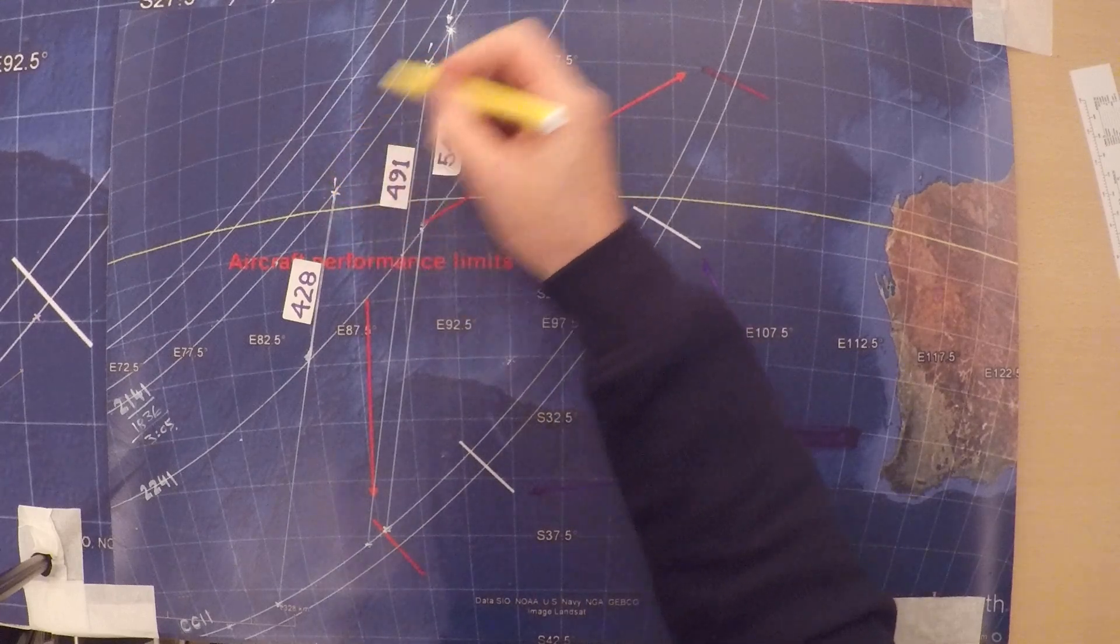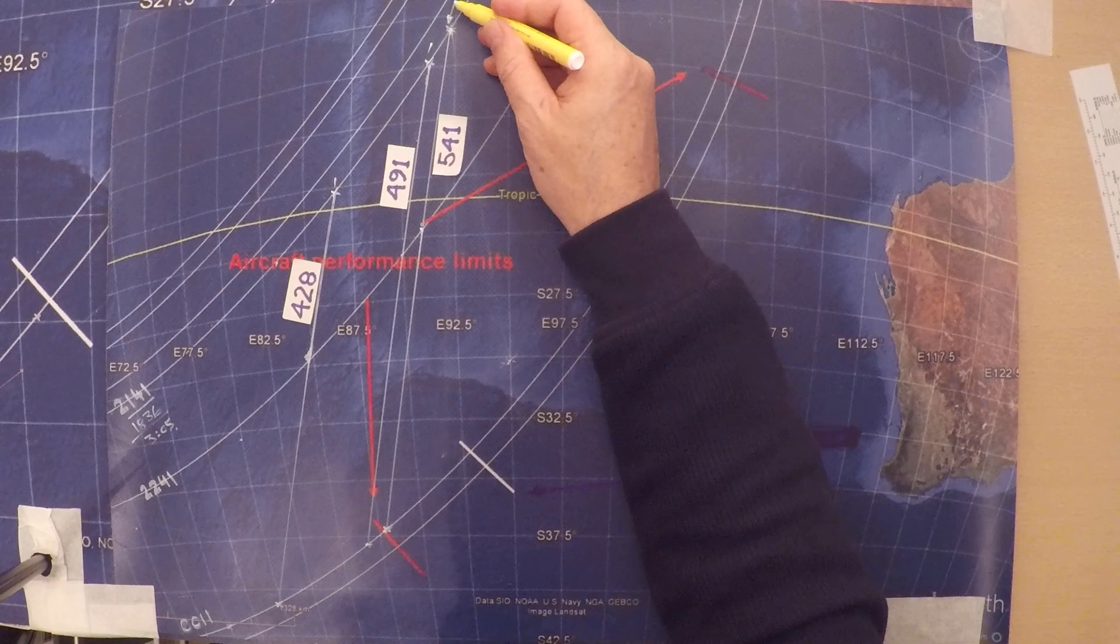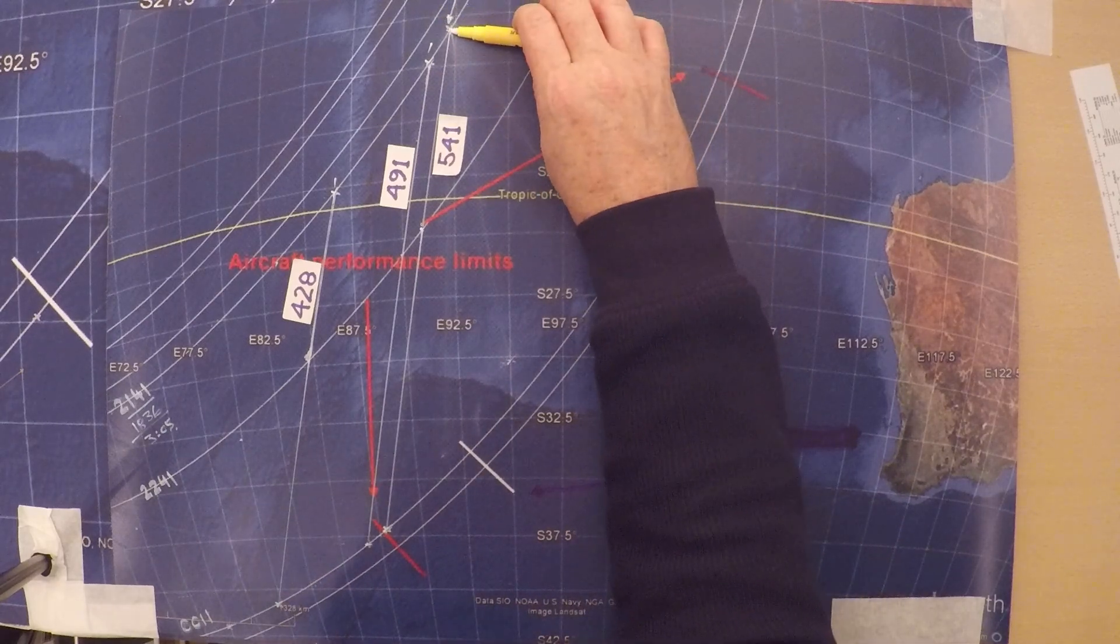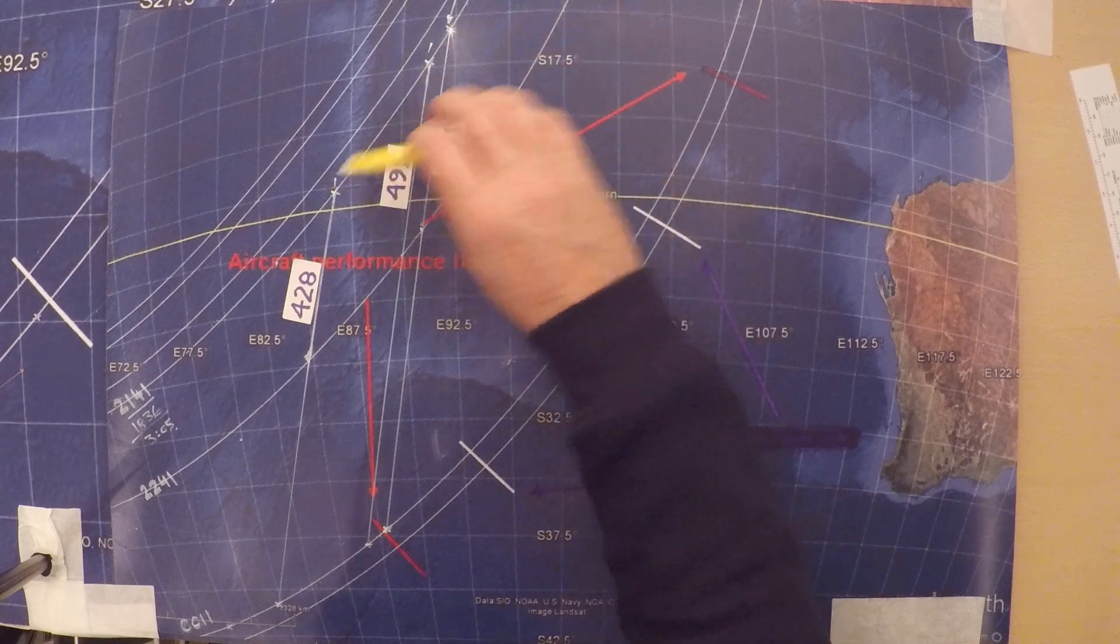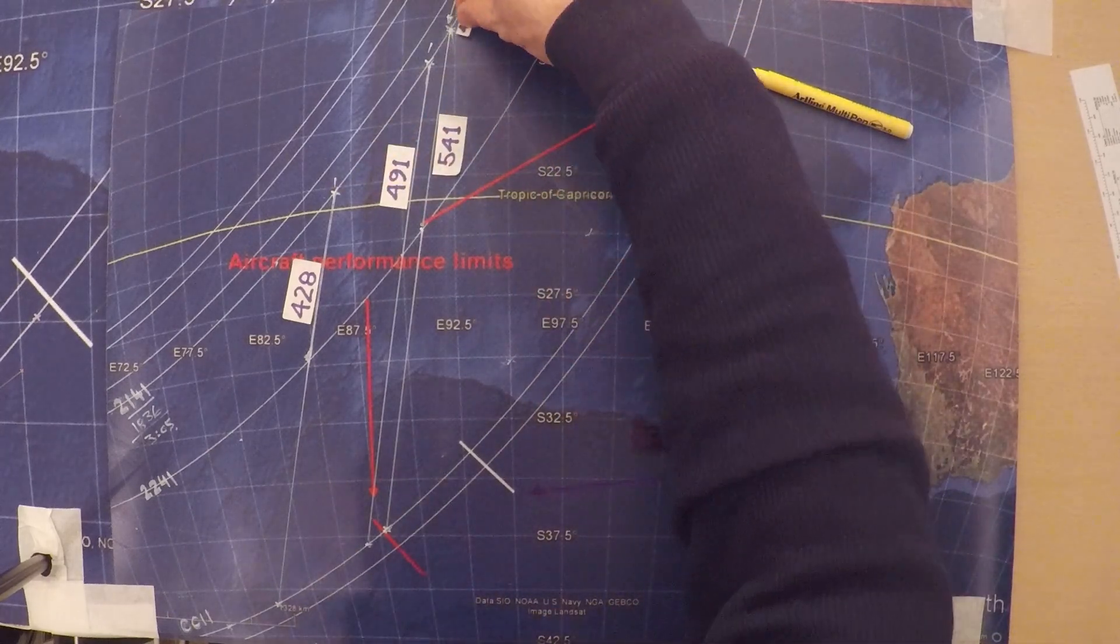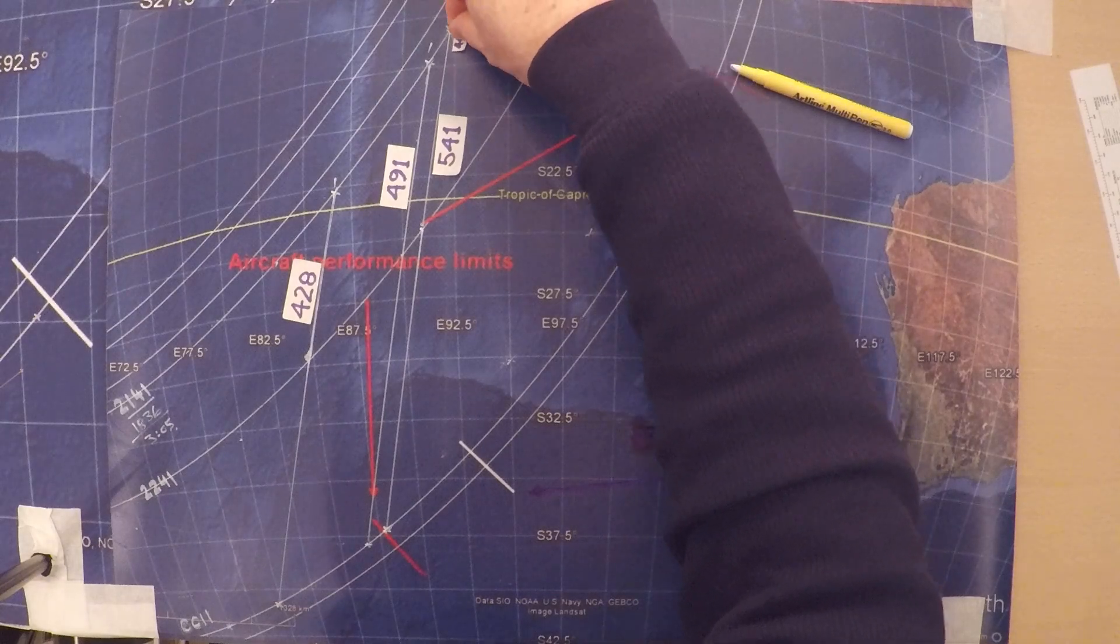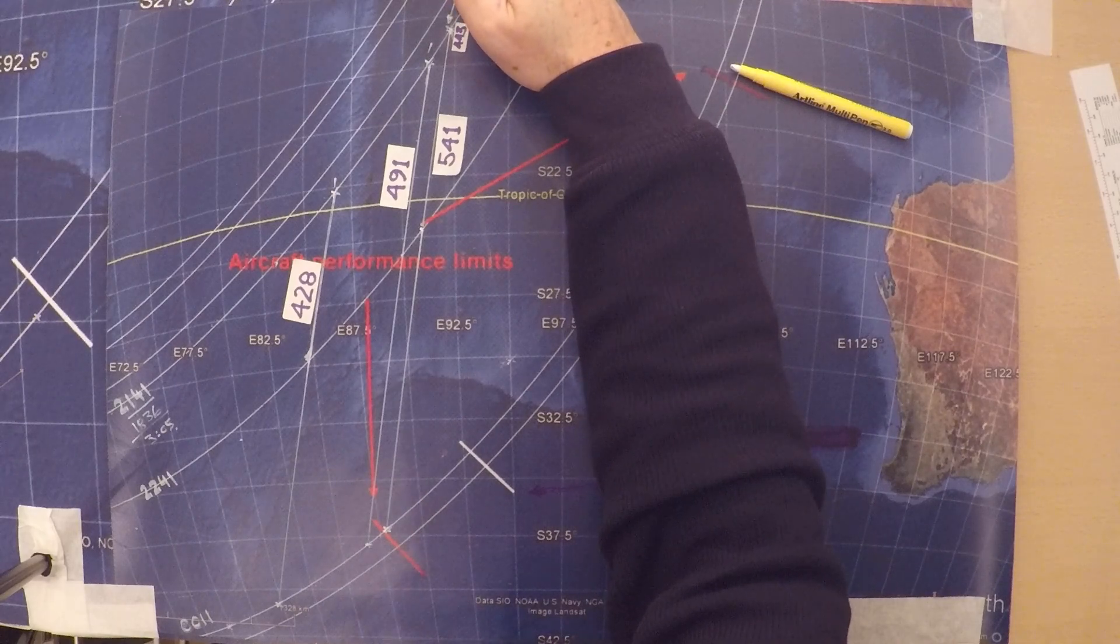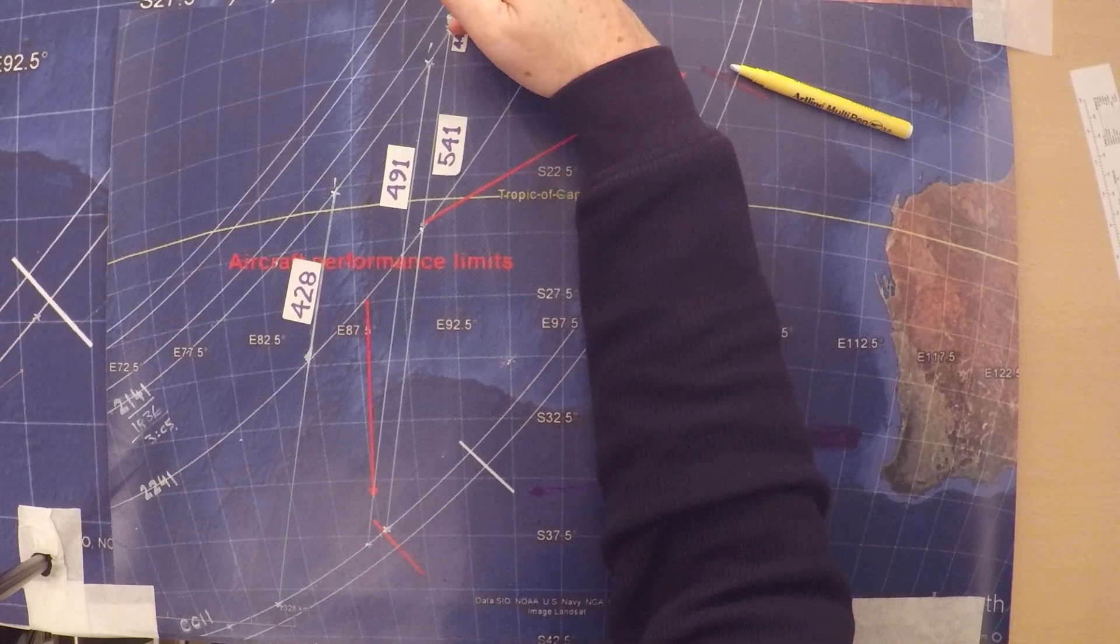But this point is a lot further away than this point. So we're going to find that the speed required to get to here is much less than here. So I measured those distances. And the speed required to get to this point is four hundred and forty-three knots. We'll try and fly at four hundred and forty-three knots from Anoko. Get to this point.